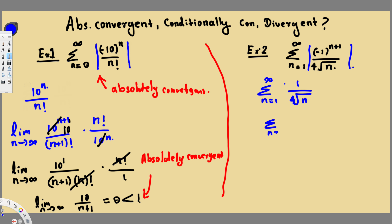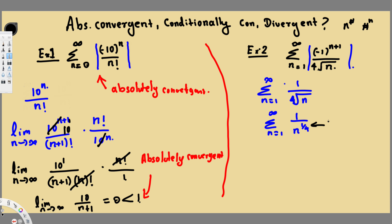The absolute value of (−1)^(n+1) is positive 1, so we have 1 over the fourth root of n, which is the same as n=1 to infinity of 1 over n^(1/4). This is a p-series because we have n raised to a number. This value p = 1/4 is less than 1, so this is definitely a divergent p-series — it is not absolutely convergent.